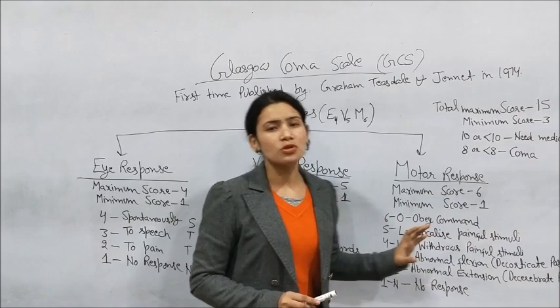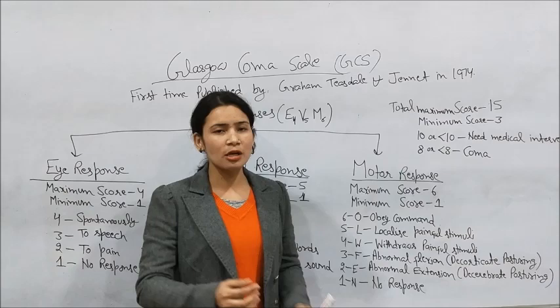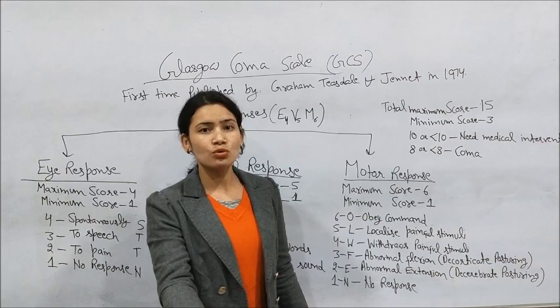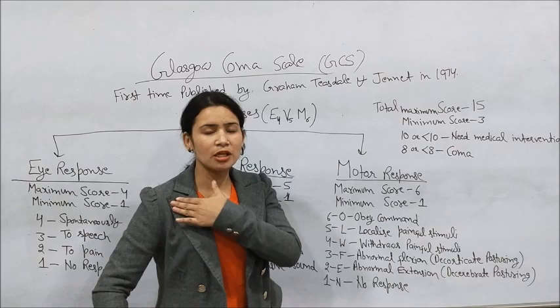The next one is motor response. Motor response has a maximum scoring of six and a minimum scoring of one. We give six scores when the patient obeys commands — for example, if we tell the patient to flex their arm and they correctly flex it in response to the command.